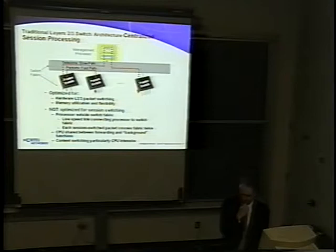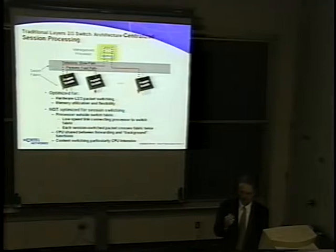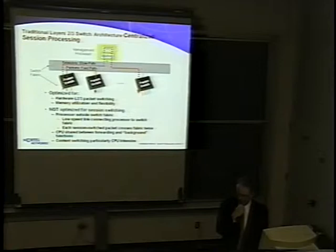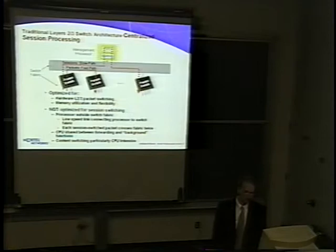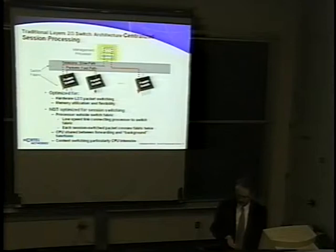All traffic to be session-switched at layer 4 must be sent to a centralized CPU — the slow path. The traffic must cross the switch fabric or backplane twice: once when it comes in the ingress port, gets processed by the CPU, then goes back out the egress port. In layer 4 through 7 processing, the CPU needs to be part of the forwarding path for the majority of packets. Hence, the centralized CPU architecture with a slower fabric-to-CPU link becomes a bottleneck when there's a lot of session-switched traffic.